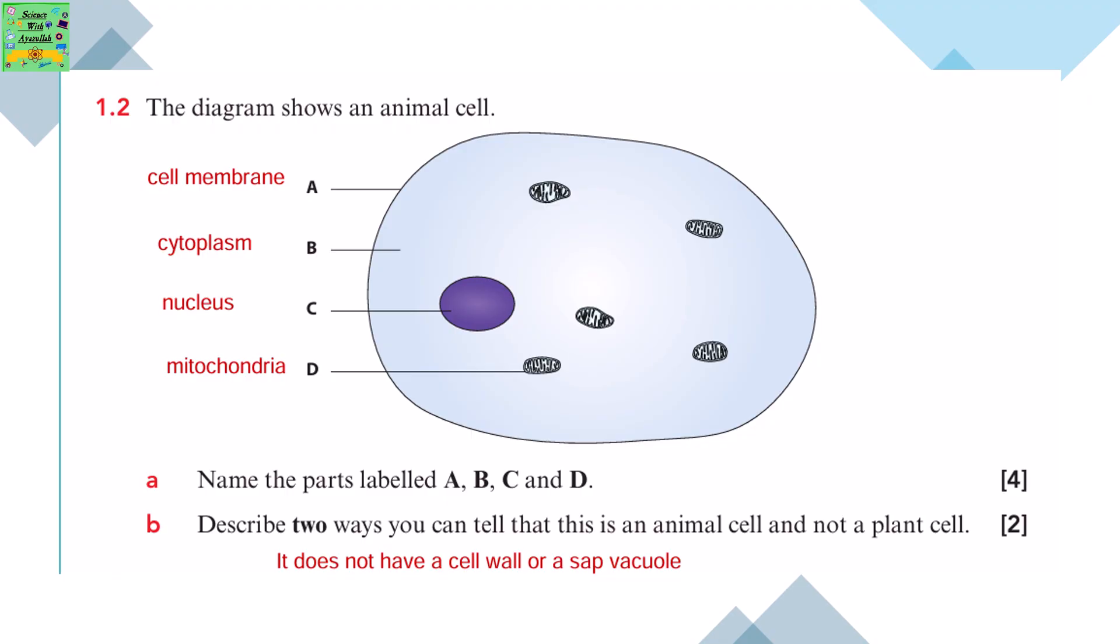The diagram shows an animal cell. You need to label the parts A, B, C and D. A is cell membrane, B is cytoplasm, C is nucleus, D is mitochondria.